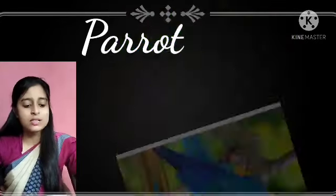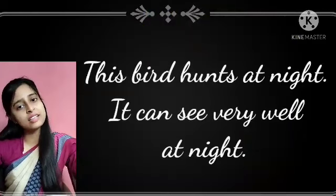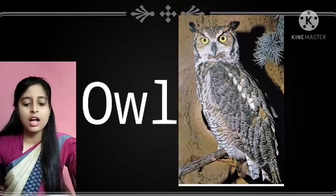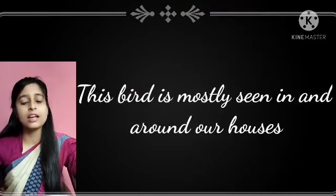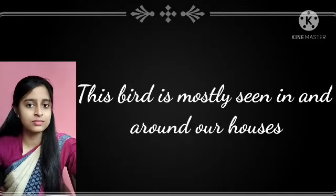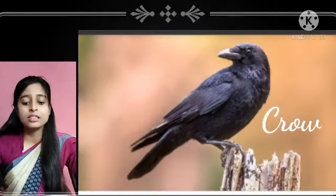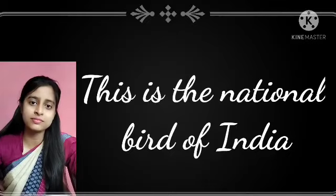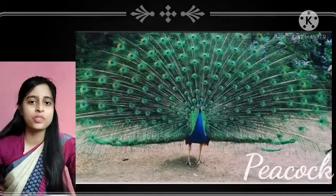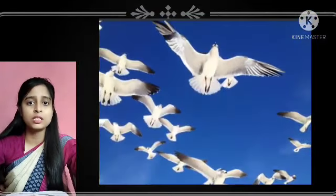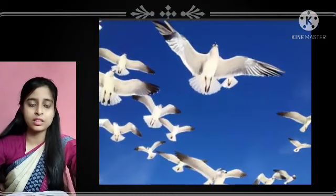My second question: this bird hunts at night and can see very well at night — that is an owl. Now, this bird is mostly seen in and around our houses and is black in color — that is crow. And this is the national bird of India — that is peacock.